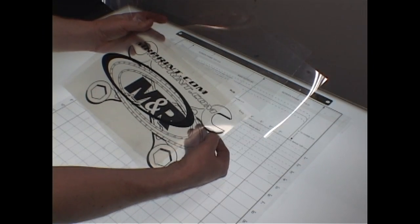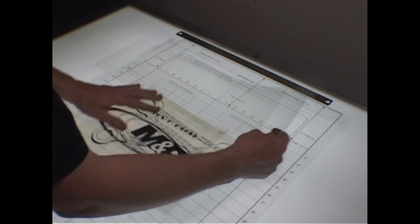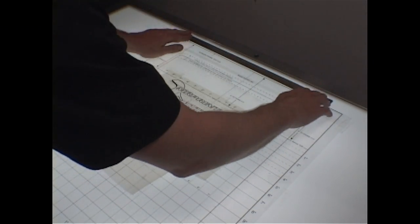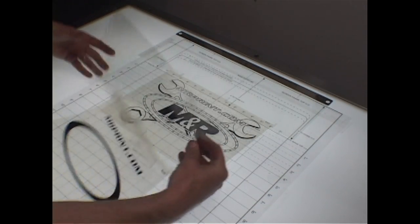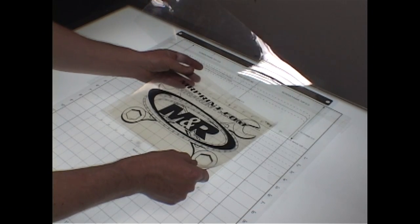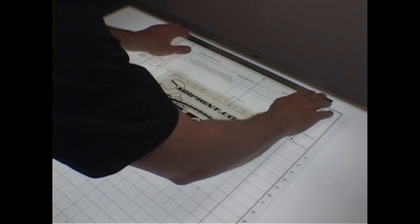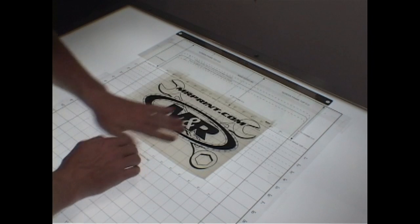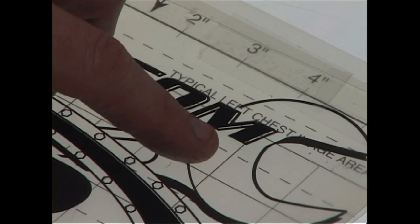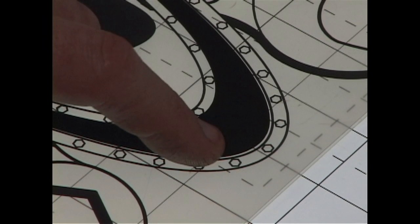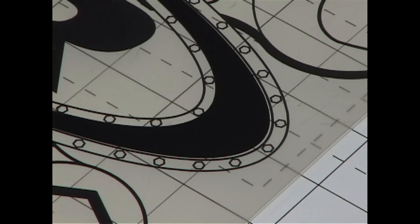The first step is to check the films for proper alignment. Set the main trap film on the light table's pin bar, then set the offending colors film over the trap film and confirm alignment. In this case, the films were not aligned properly in the art department. Realign the film and burn a new screen to resolve the issue.